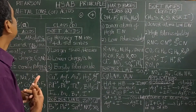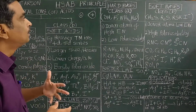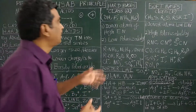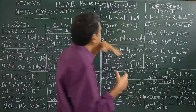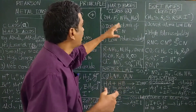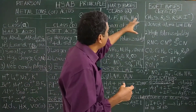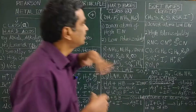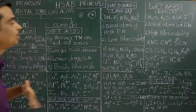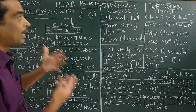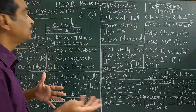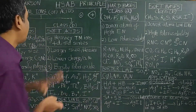Ligands such as F minus and ammonia are bases. They donate electron pairs, according to Lewis theory.